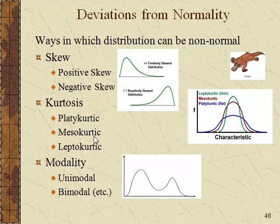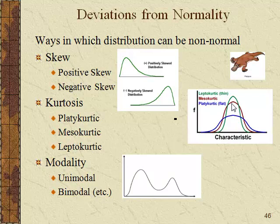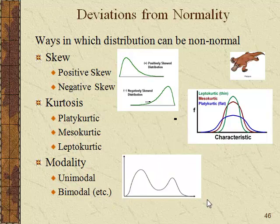Kurtosis has to do with the variability of scores. If scores are really spread out and flat, the distribution is platycurtic — that's high variability (same 'plat' root as platypus, meaning flat). Mesocurtic is what a normal curve looks like. If there's very low variability and scores cluster tightly, you get a pointy shape called leptokurtic. The third deviation is modality — when you have two distinct humps, called bimodal, or even trimodal, quadrimodal, etc.